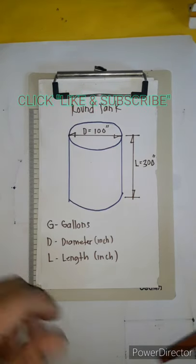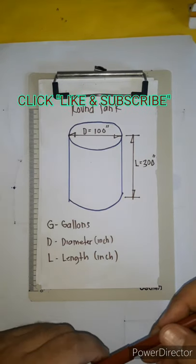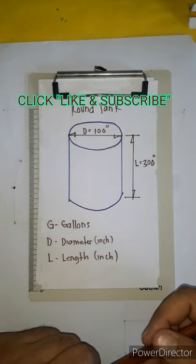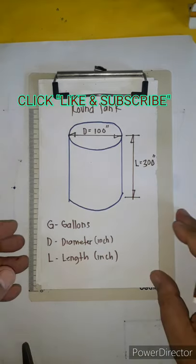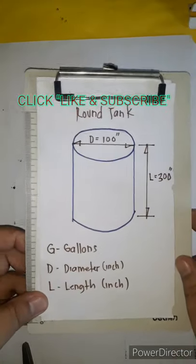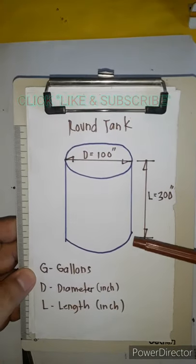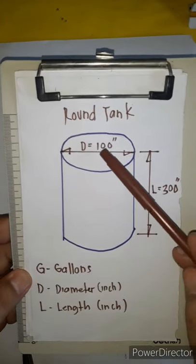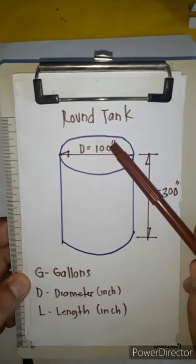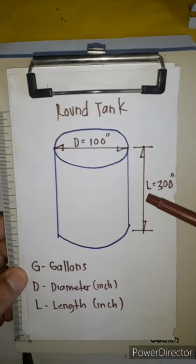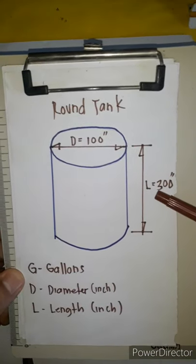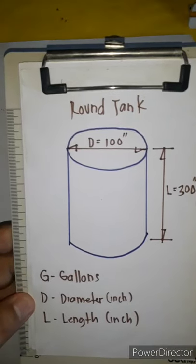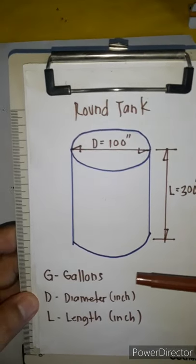Welcome to the 5mm sheet metal tutorials. Today, I will show you how to calculate a round tank capacity — specifically, how to calculate the number of gallons. We have a diameter of 100 inches and a length of 300 inches. This is the simplest way to calculate the number of gallons.